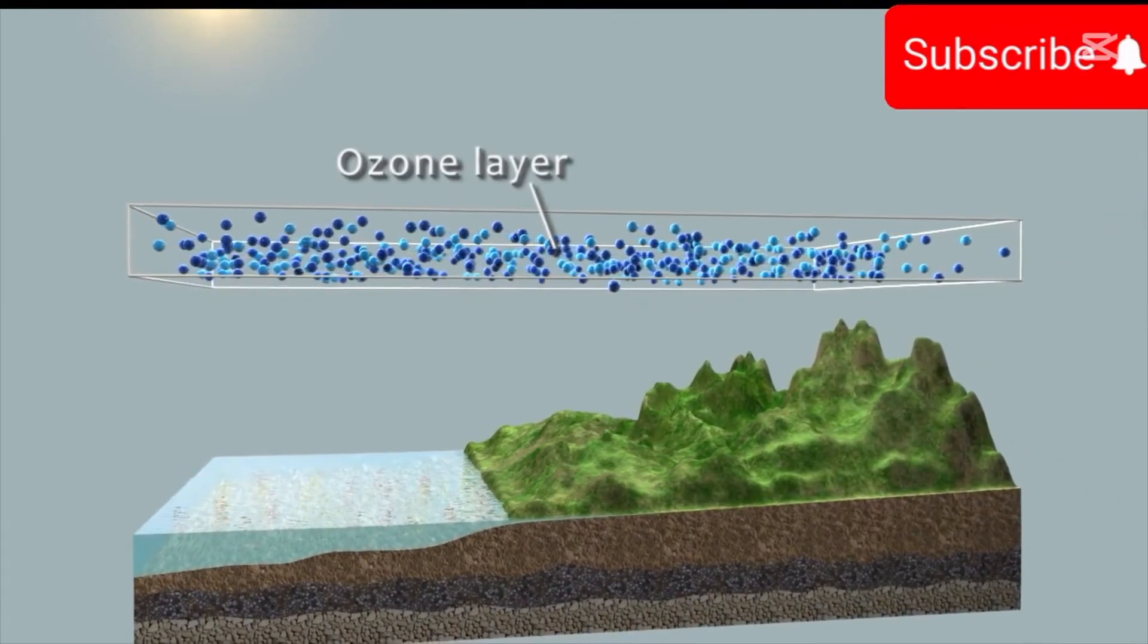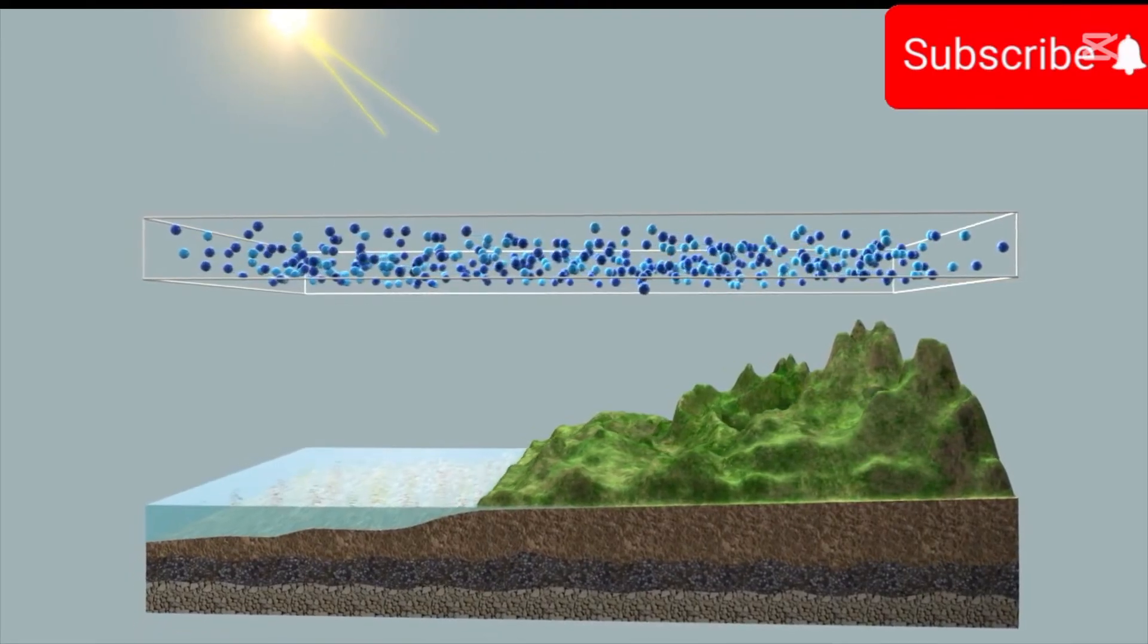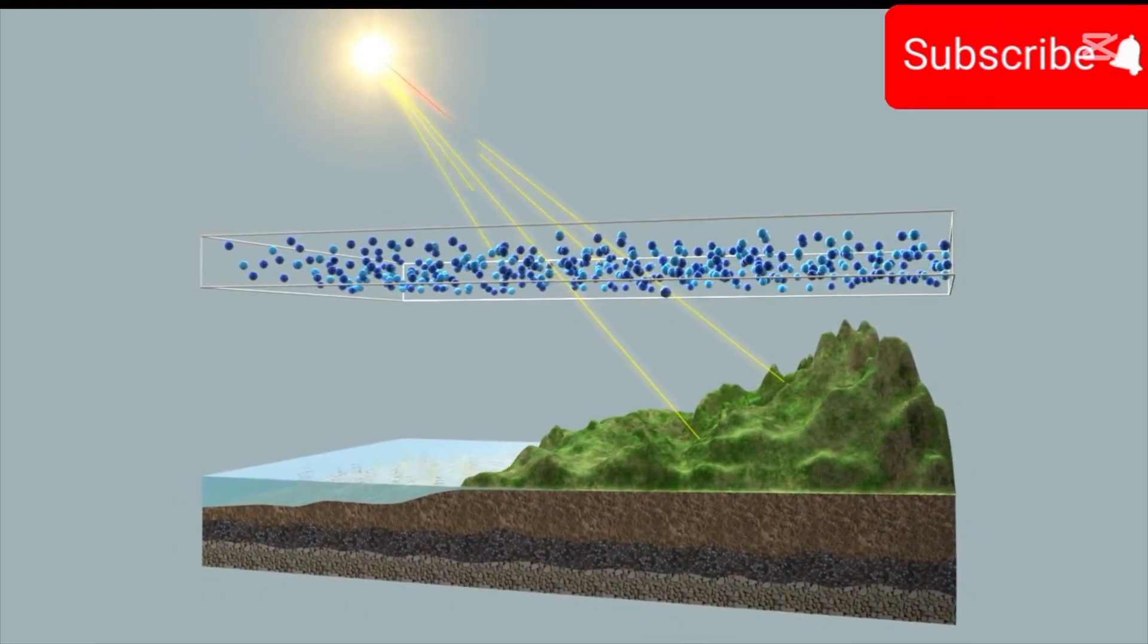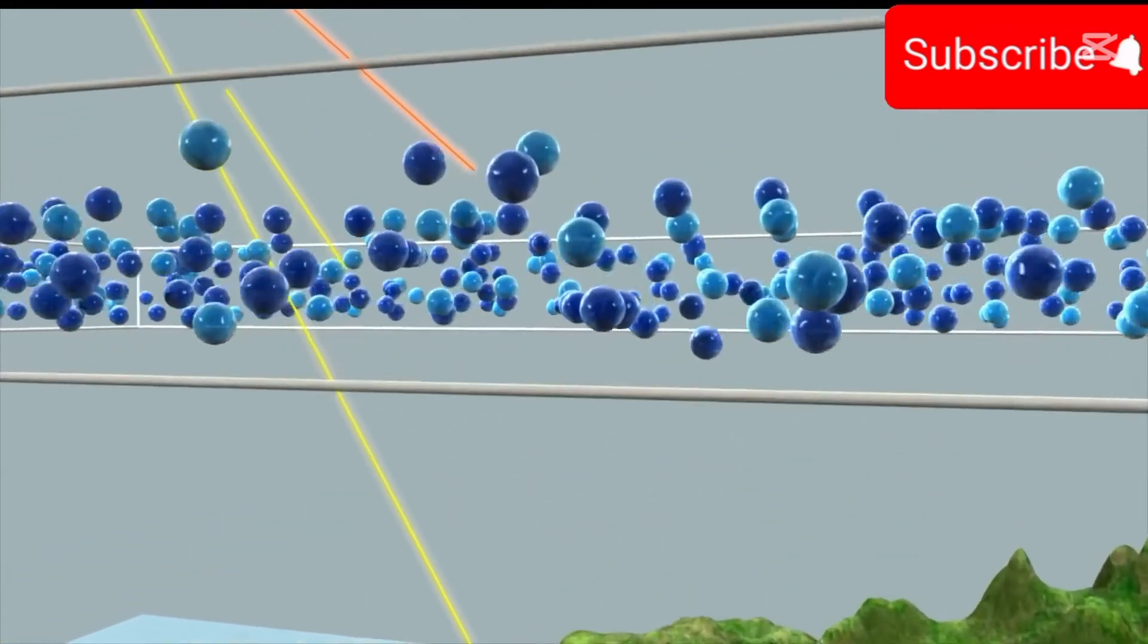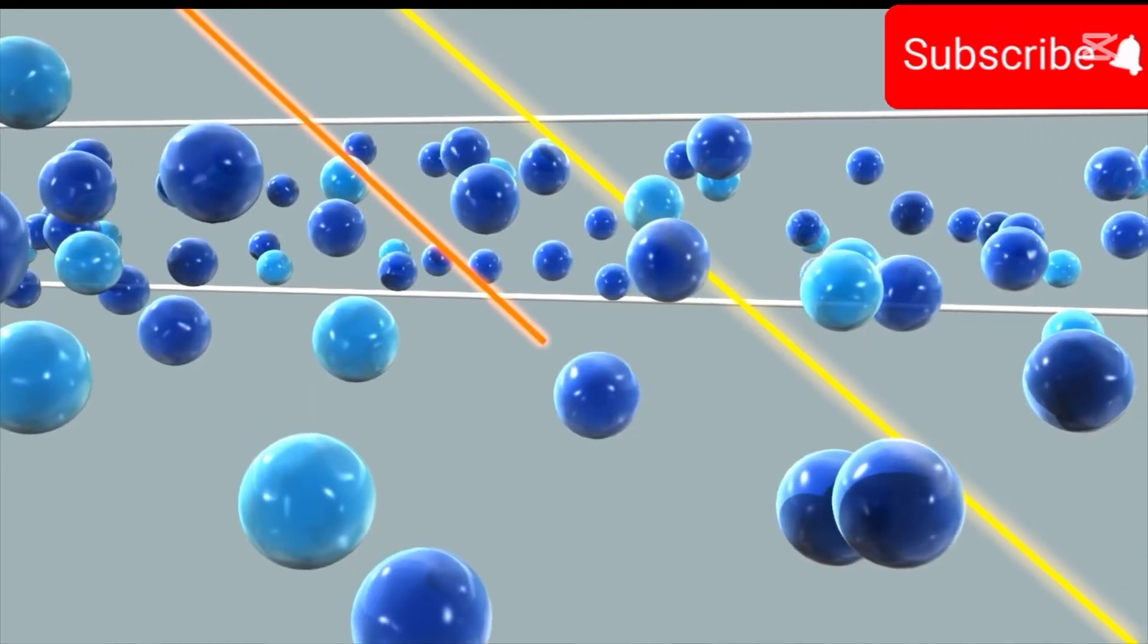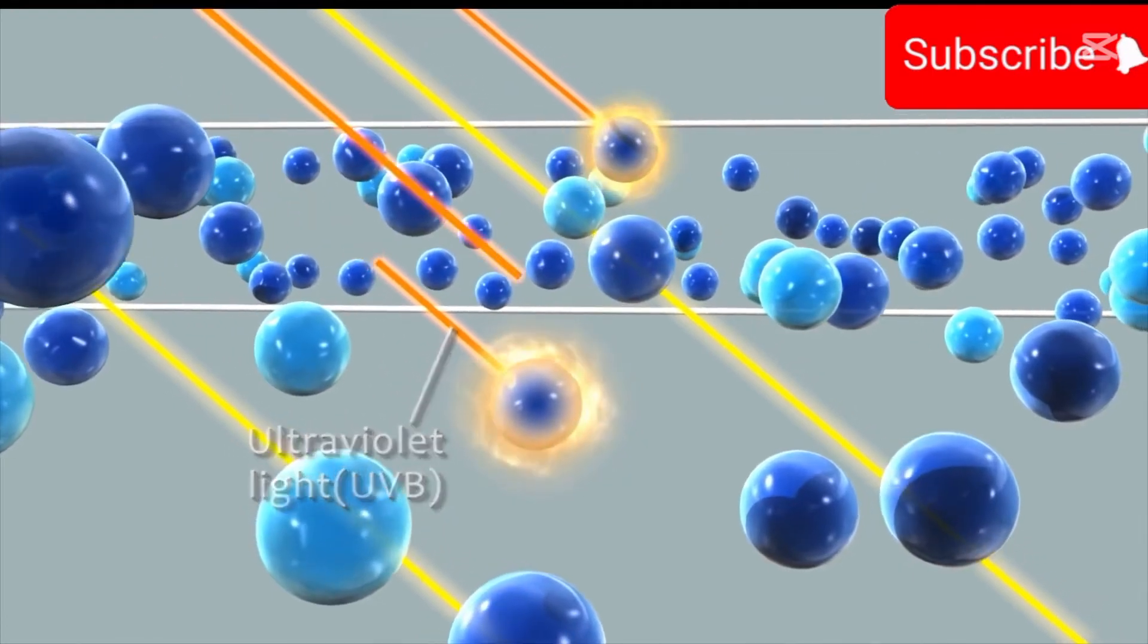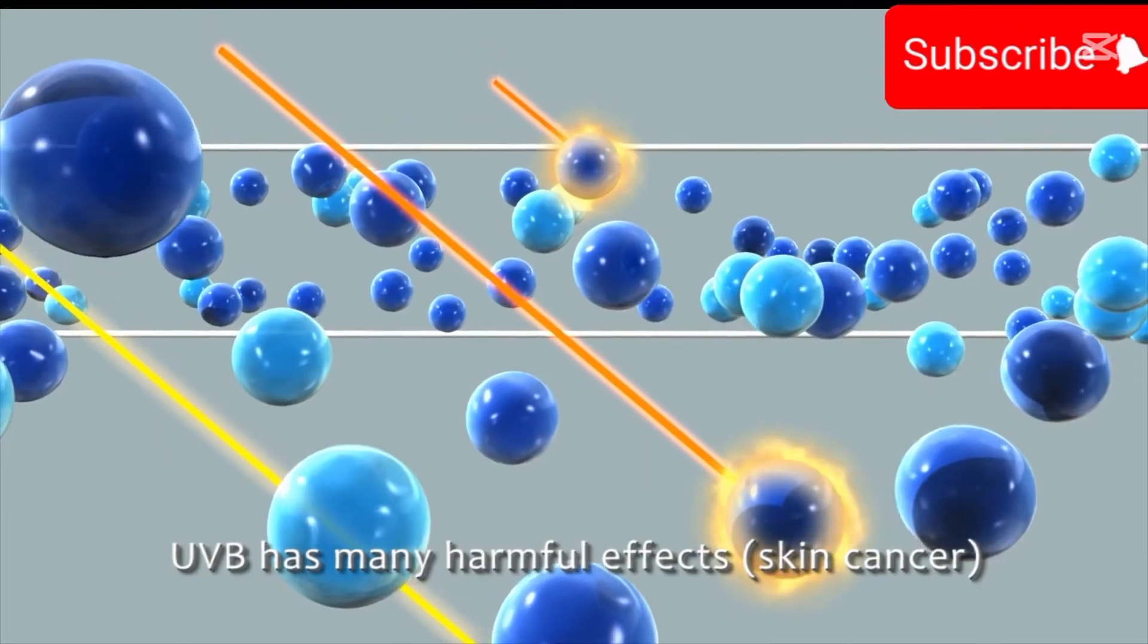However, the ozone layer performs a very essential function. It absorbs a portion of the sun's radiation, thus preventing it from reaching the planet's surface. Most importantly, it absorbs the portion of ultraviolet light called UVB. UVB has many harmful effects.